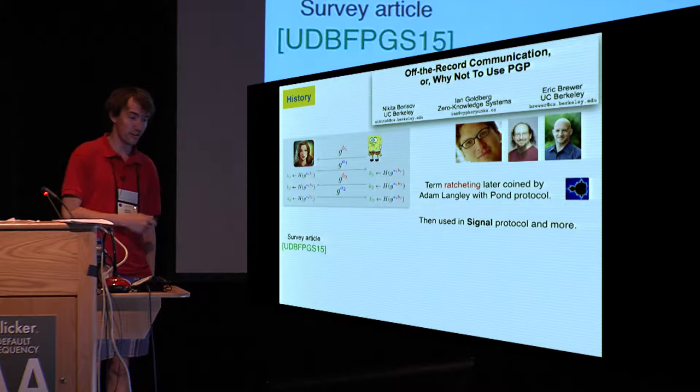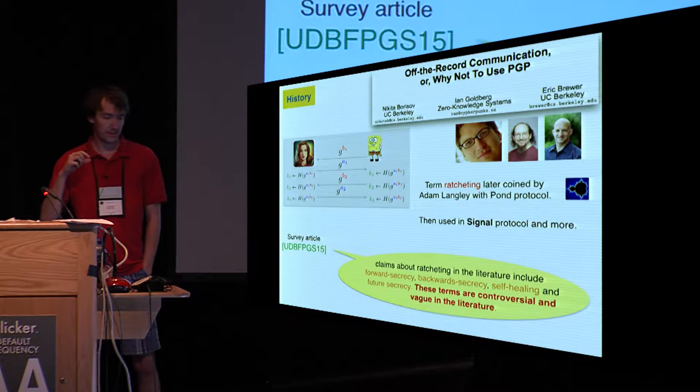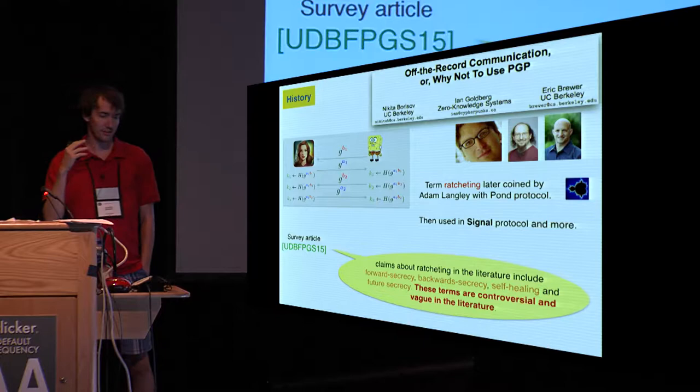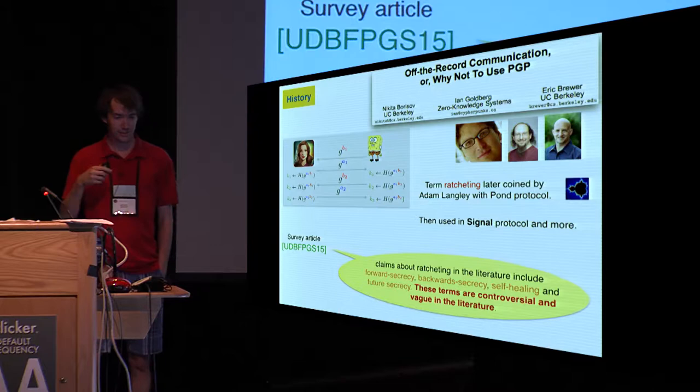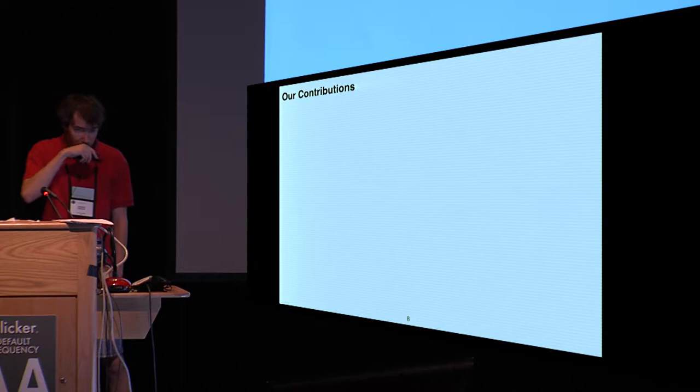There was also recently a survey article, a systemization of knowledge on messaging apps, which noted that there are many claims in the literature, including forward secrecy, backward secrecy, self-healing, and future secrecy, but that these terms are controversial and vague in the literature.